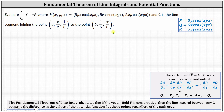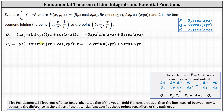Now determine the partial of q with respect to x and the partial of p with respect to y. I've already worked some of this out to save time. To determine the partial of q with respect to x, we differentiate 5xz cosine(xyz) with respect to x, treating y and z as constants. To find the partial derivative, we need to apply the product rule and the chain rule.